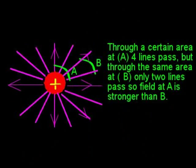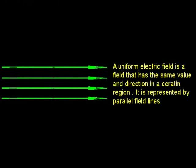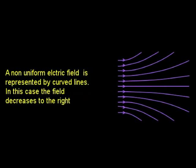As an example, four field lines pass through a certain area placed at point A, but only two field lines pass through the same area if it is placed at point B — this indicates that the field strength at A is stronger than the field at B. A uniform electric field has the same value and direction in a certain region and is represented by parallel field lines. A non-uniform electric field is represented by curved lines, and the field shown decreases to the right.